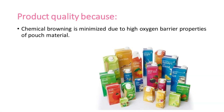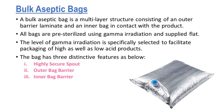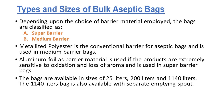They can extend shelf life due to the following: high oxygen barrier of the laminate; laminate is less susceptible to flex cracking; secure spout with limited possibility of oxygen permeation; spout is made of HDPE, which has three times less oxygen transmission rate compared to LDPE; and there is no head space in the bag. Product quality is high because chemical browning is minimized due to high oxygen barrier properties of the pouch material. A bulk aseptic bag is a multi-layer structure consisting of an outer barrier laminate and an inner bag in contact with the product. All bags are pre-sterilized using gamma irradiation and supplied flat. The level of gamma irradiation is specifically selected to facilitate packaging of high as well as low acid products. The bag has three distinctive features: highly secure spout, outer bag barrier, and inner bag barrier. Depending upon the choice of barrier material employed, the bags are classified as super barrier and medium barrier. Metalized polyester is the conventional barrier for aseptic bags and is used in medium barrier bags. Aluminum foil as barrier material is used if the products are extremely sensitive to oxidation and loss of aroma, and is used in super barrier bags. The bags are available in sizes of 25 liters, 200 liters, and 1,140 liters. The 1,140 liters bag is also available with a separate emptying spout.